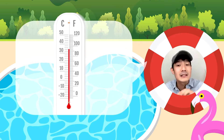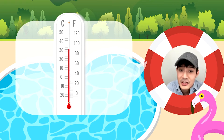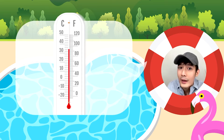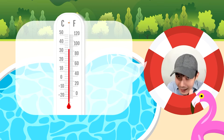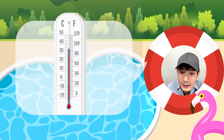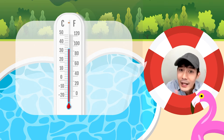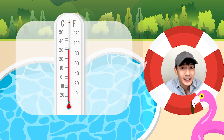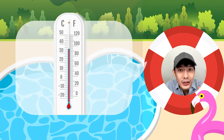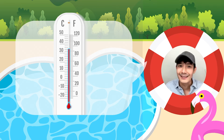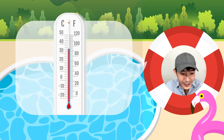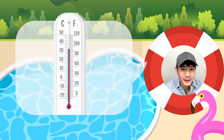Ang thermometer ay may glass bulb, which is the temperature sensor that is attached to a glass tube with a number scale. Ang liquid na nakikita natin sa loob, na tumataas at bumababa depende sa temperatura, ay alcohol and mercury. Sa mga batang nanonood, huwag kayong mag-eksperimento at buksan yung laman nun. Dahil ang mercury, delikado yan. Huwag nyo mahawakan masyado at huwag nyo kakainin. Huwag paglalaroan ng thermometer.